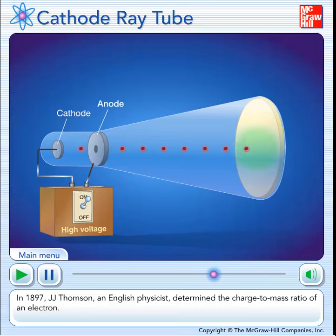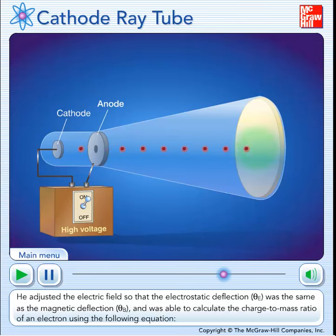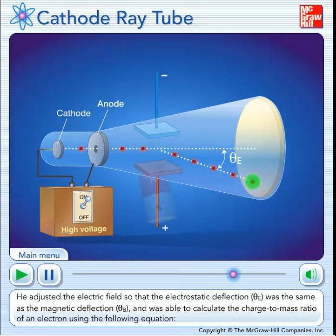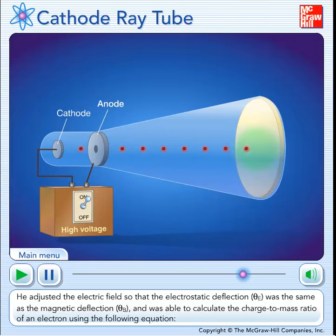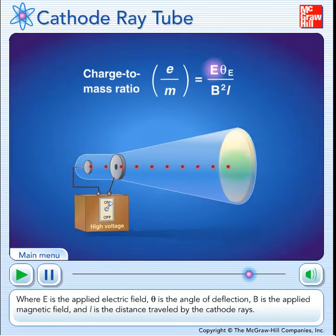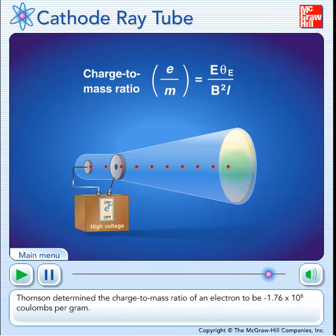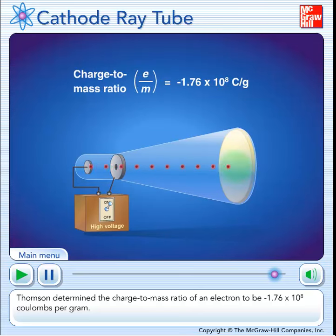In 1897, J.J. Thomson, an English physicist, determined the charge-to-mass ratio of an electron. He adjusted the electric field so that the electrostatic deflection, theta e, was the same as the magnetic deflection, theta b, and was able to calculate the charge-to-mass ratio of an electron using the following equation. Where e is the applied electric field, theta is the angle of deflection, b is the applied magnetic field, and l is the distance traveled by the cathode rays. Thomson determined the charge-to-mass ratio of an electron to be negative 1.76 times 10 to the 8th coulombs per gram.